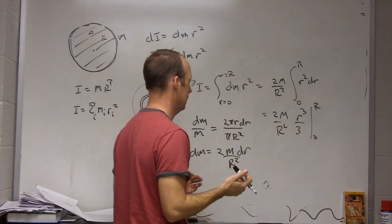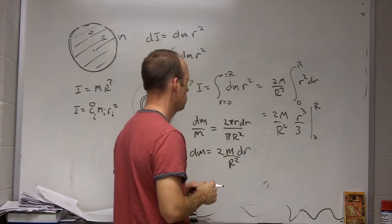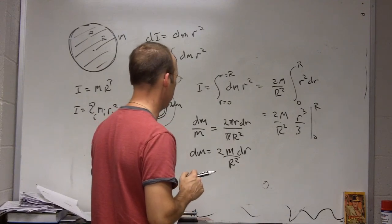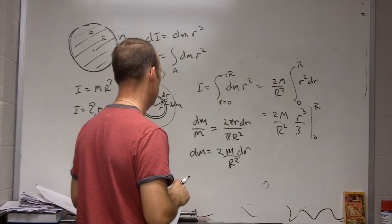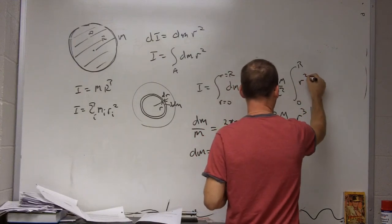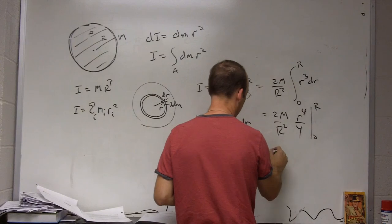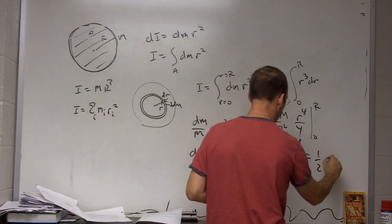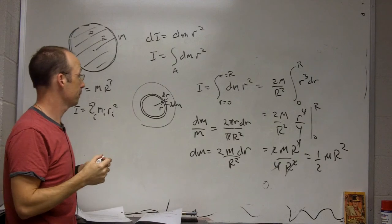Why does it look like I made a mistake? Two-thirds, that's not right. Someone help me here - I made a mistake because I know it's one half mr squared is the answer. Oh, I left out an r! So this is r cubed, so it's going to be r to the fourth over four. Okay, so now if I put in big R minus zero, I get 2m r to the fourth over 4R squared. That cancels and I get one half mr squared. So that's the moment of inertia for a disc. It's half as much as for a ring of the same size and mass.